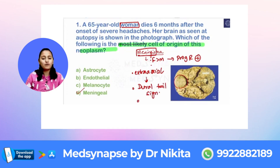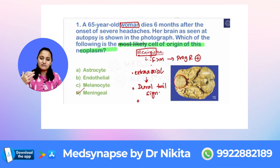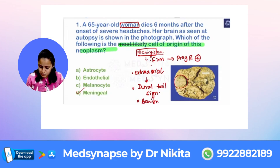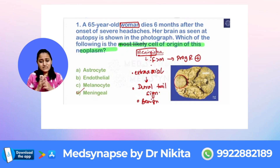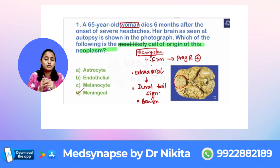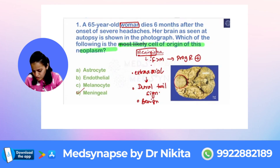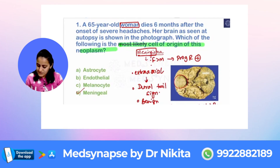Meningioma is generally a benign tumor — many times a female would have it and not even know it until imaging is done for a headache or something. The next point to remember is that it causes hyperostosis, not bone erosion. A tumor which is slow-growing, present for a long time, causes sclerosis and hyperostosis of the bone. A fast-growing tumor like metastasis causes erosion of the bone. So meningioma causes hyperostosis.